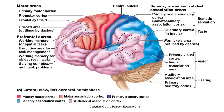The general interpretive area, also called the posterior association area, encompasses parts of the temporal, occipital, and parietal lobes — usually the left hemisphere. This region integrates sensory and motor information with emotions, plays a role in recognizing patterns and faces, localizes us to our surroundings, and binds different sensory inputs into coherent wholes. It also contains Wernicke's area, which is involved in understanding written and spoken language and sounding out unfamiliar words.